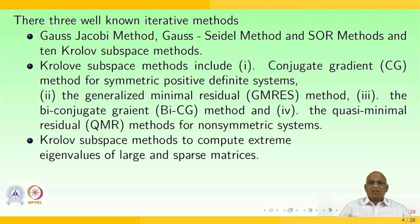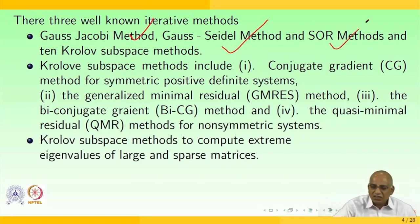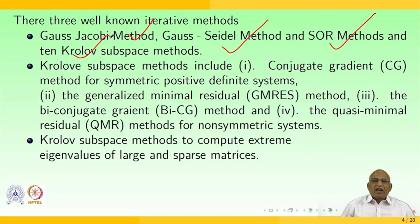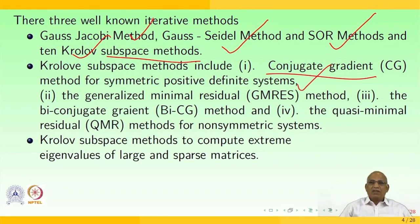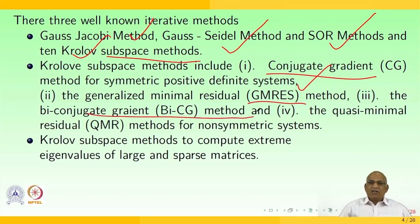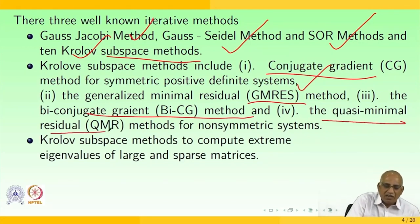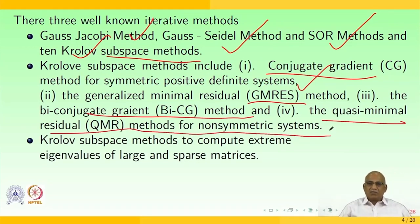The first is the Jacobi method. The second is the Gauss-Seidel method. The third is the successive over-relaxation method. We will also have Krylov subspace methods, which include the conjugate gradient method for symmetric positive definite systems, the generalized minimal residual method, the biconjugate gradient method, and the quasi-minimal residual method for non-symmetric systems. Krylov subspace methods are also used to compute extreme eigenvalues of large and sparse systems.